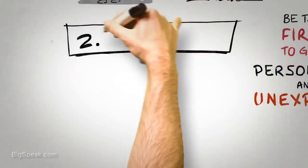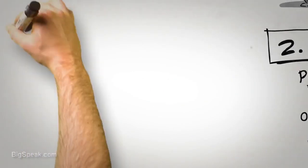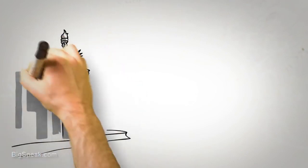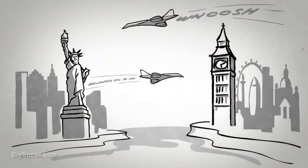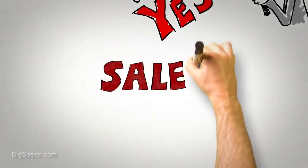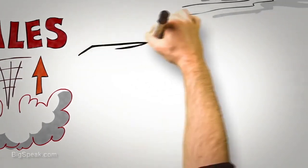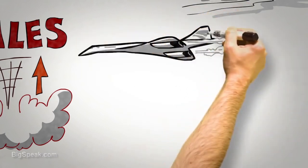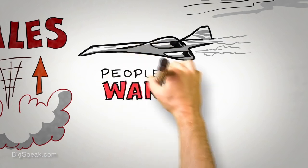The second universal principle of persuasion is scarcity. Simply put, people want more of those things they can have less of. When British Airways announced in 2003 that they would no longer be operating the twice-daily London-New York Concorde flight because it had become uneconomical to run, sales the very next day took off. Notice that nothing had changed about the Concorde itself. It certainly didn't fly any faster, the service didn't suddenly get better, and the airfare didn't drop. It had simply become a scarce resource, and as a result, people wanted it more.